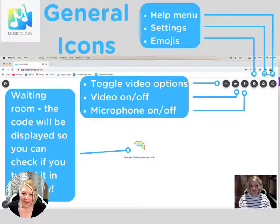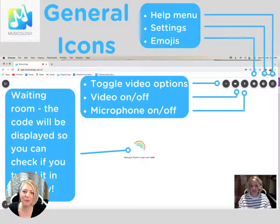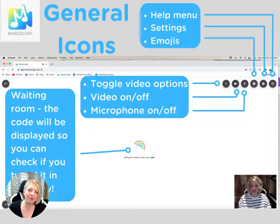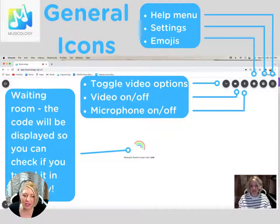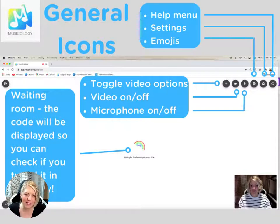The general icons at the top include the gear icon for settings, a little help menu, emojis which are definitely a student favorite, and then your microphone on/off and camera disable. When you're waiting for your teacher, you will see a spinning rainbow and it'll display the code that you typed in. Make sure you typed in the correct code — it's case sensitive and there should be no spaces at the end, exactly as your teacher sent it to you.